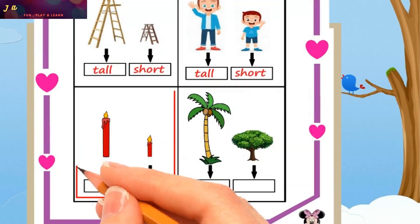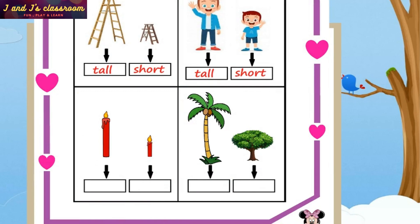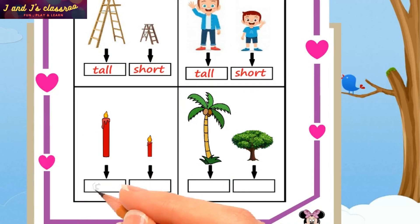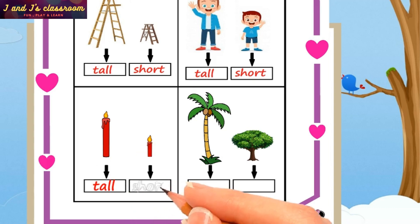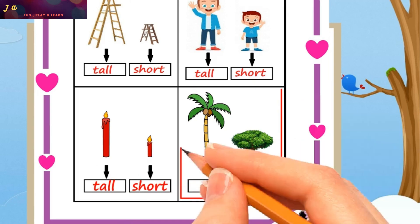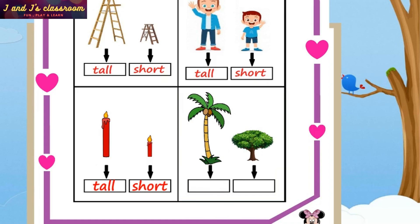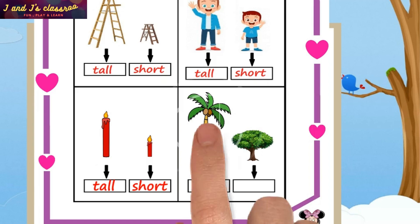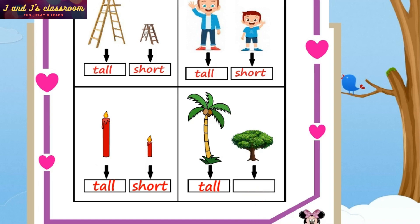See the third question — there are two candles. Which one is tall and which one is short? Tall — okay, right. Short — now the last question: there are two trees. Which tree is tall and which one is short? Tall tree — yes, write tall. Short tree — right, write short in the given box.